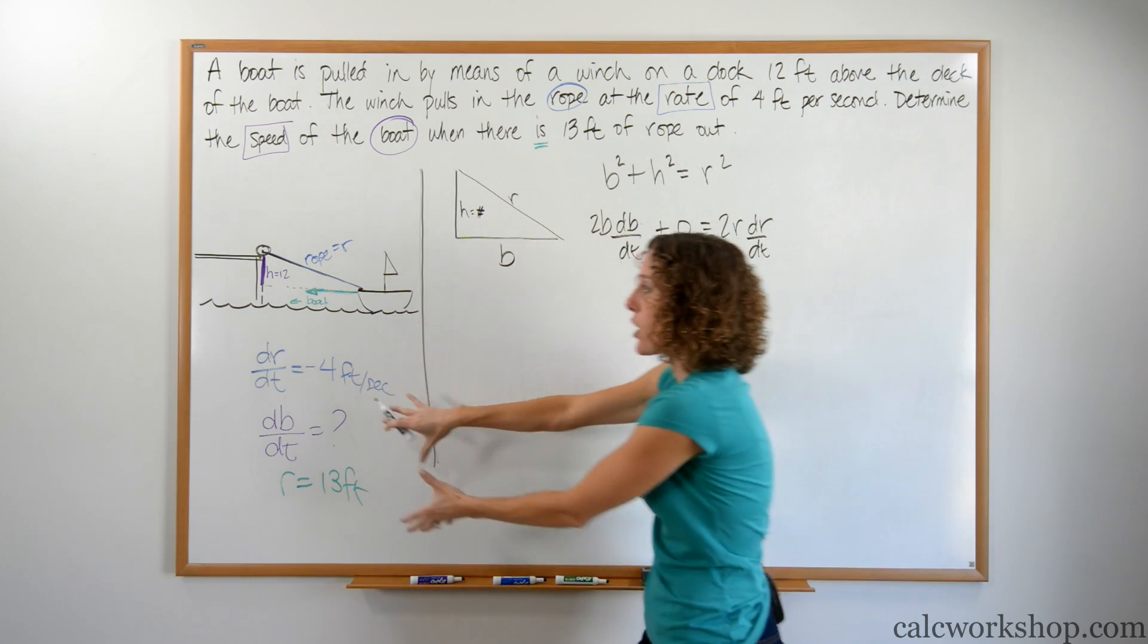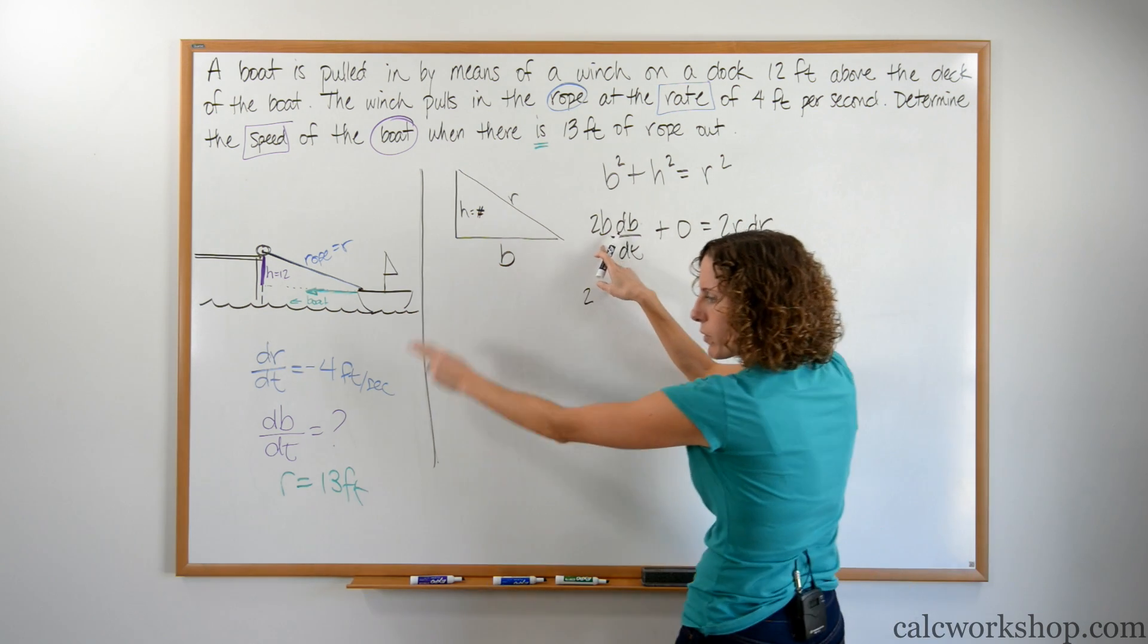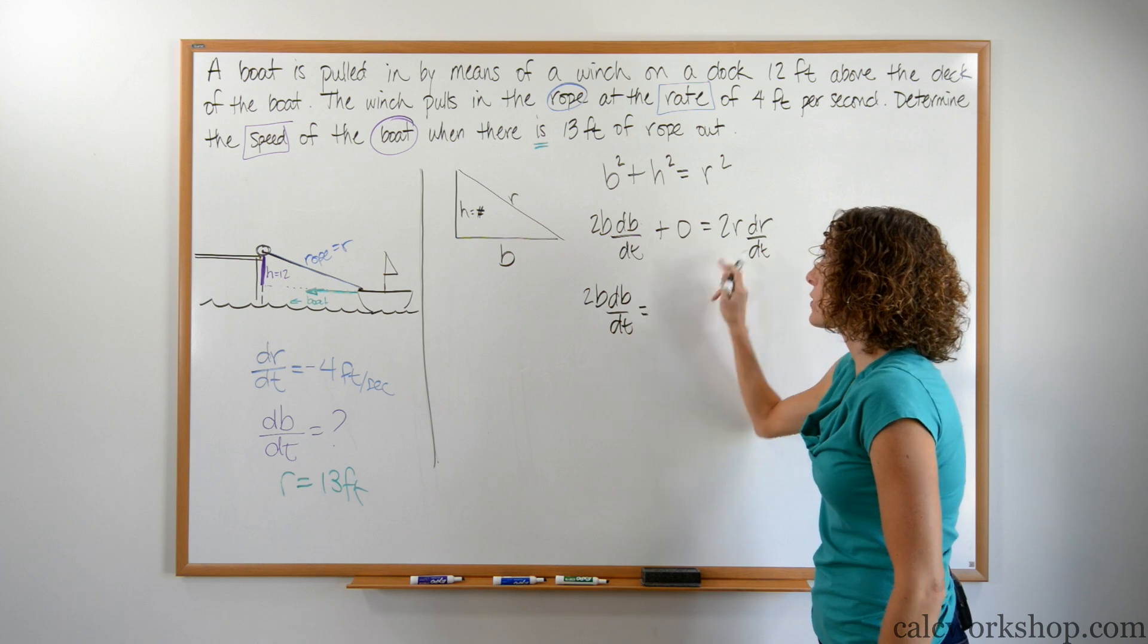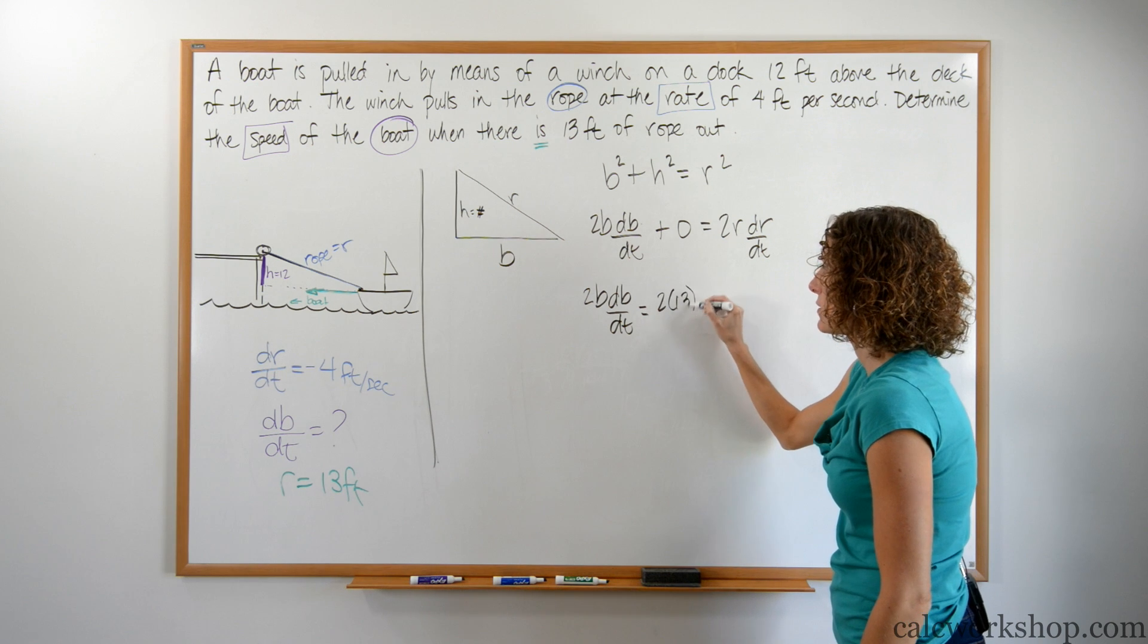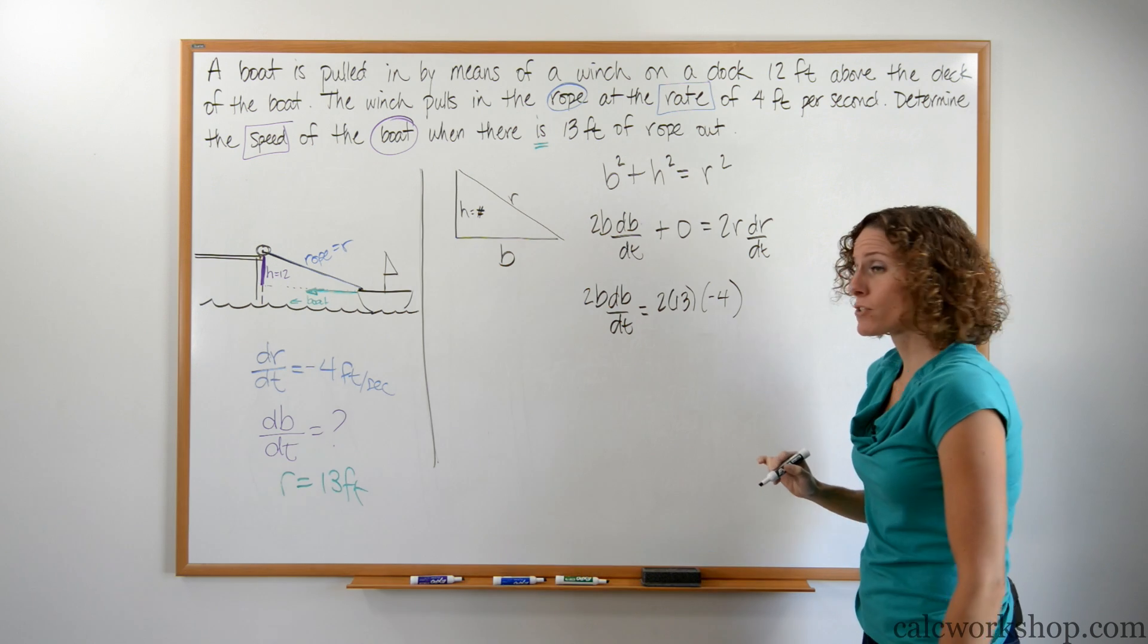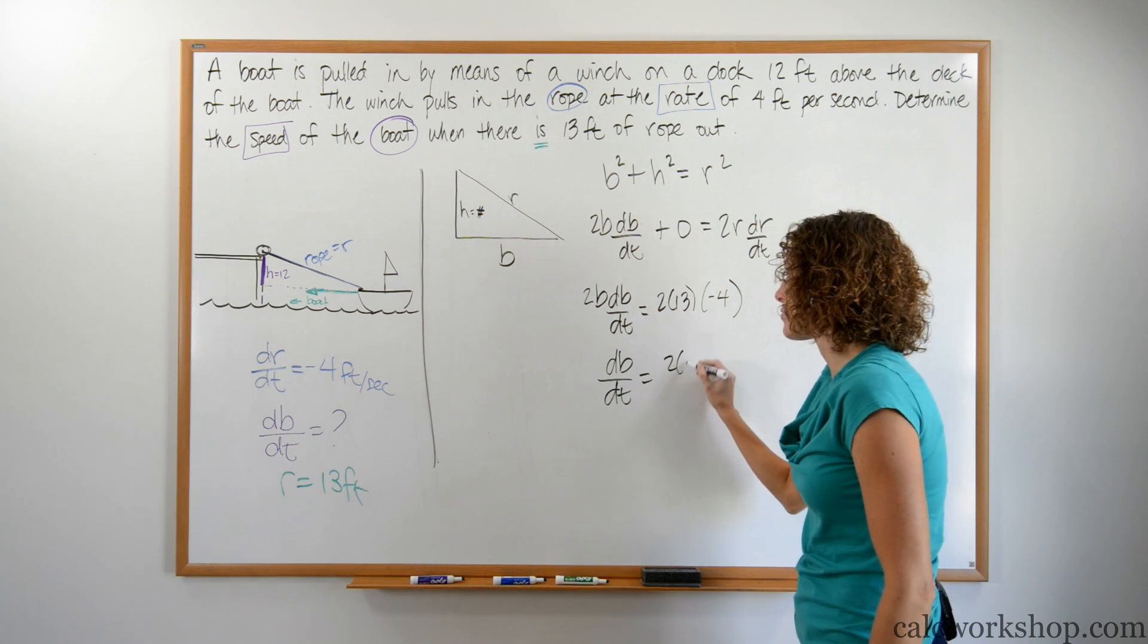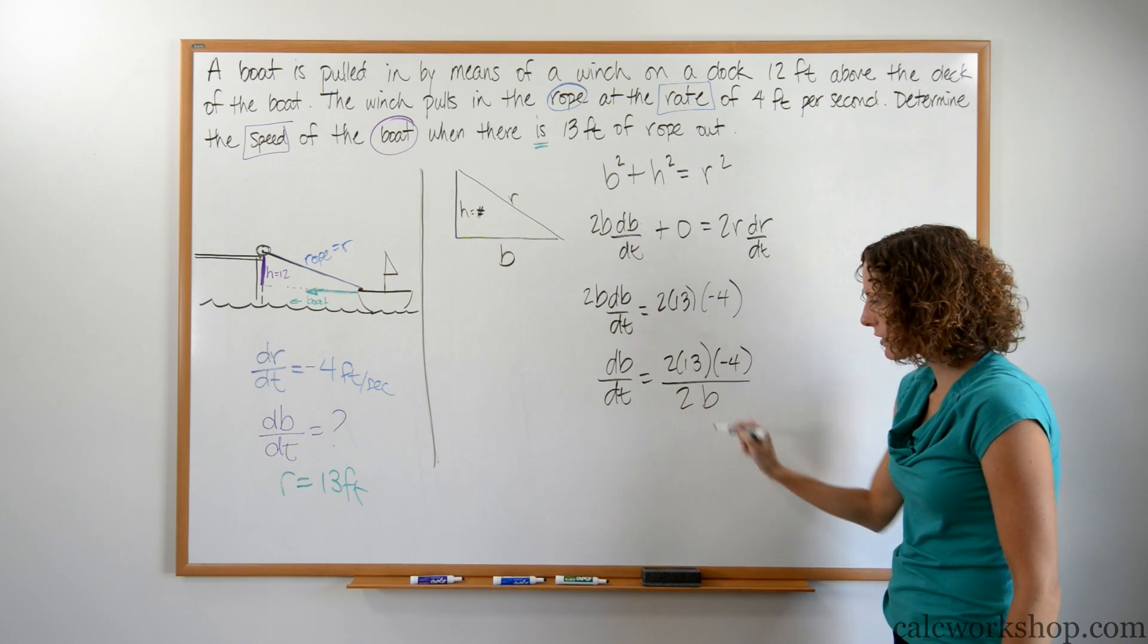Now that we have all that, let's plug in everything we know into our problem and simplify. We have 2 times b. We don't have a b, so we're going to leave it. db/dt is what we're looking for, so we're going to leave it. db/dt equals 2 times r. They told us r was 13. That's great. And they told us dr/dt was negative 4. That's also great. So now what I'm looking for is db/dt.